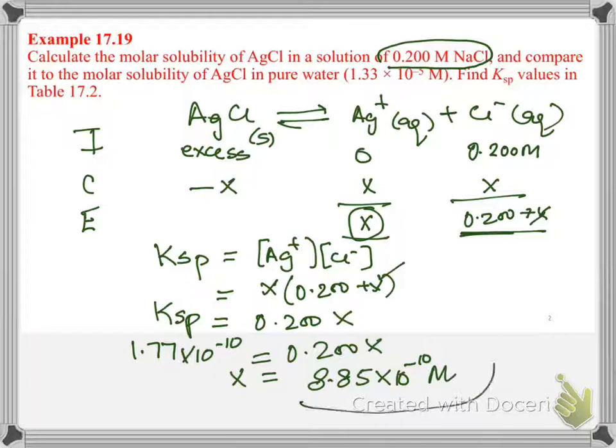So compare this molar solubility with molar solubility AgCl. So it is 1.33 times 10 to the negative 5th. But now, in the aqueous solution of sodium chloride, it is 8.85 times 10 to the negative 10th. So it is much lower than the silver chloride in pure water due to the presence of common ion chloride.